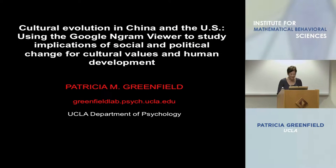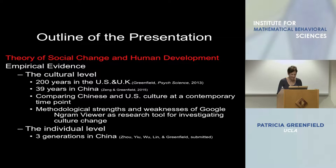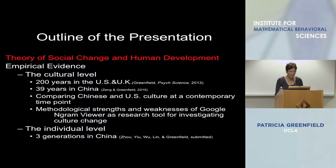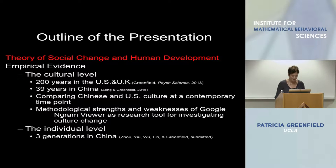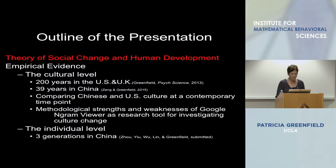Here is my outline. I'm going to start with my theory of social change and human development, then move to the empirical evidence on both the cultural level — where I'll be looking at national samples of books as a cultural product using the Google Ngram Viewer, which is where big data come in — and then relate that to the individual level, where we get our data by interviewing actual people face to face.